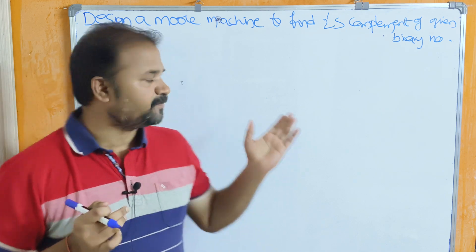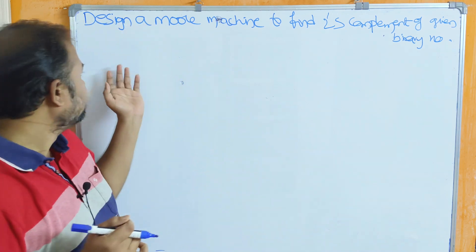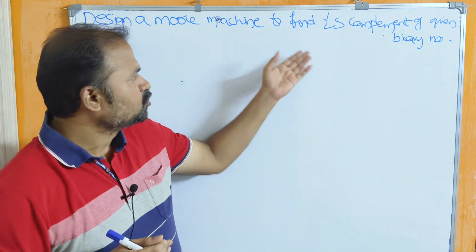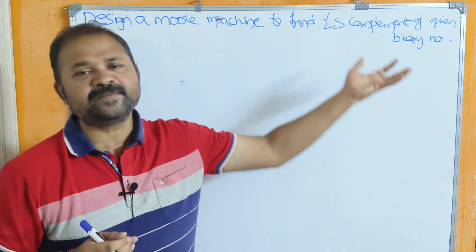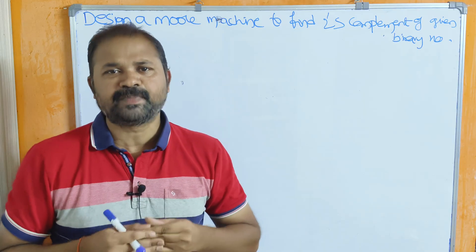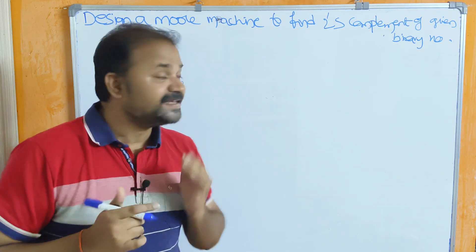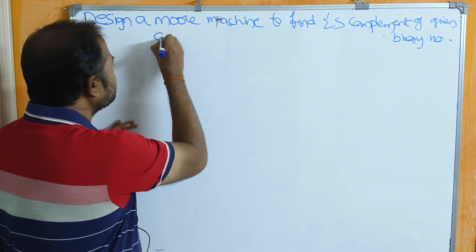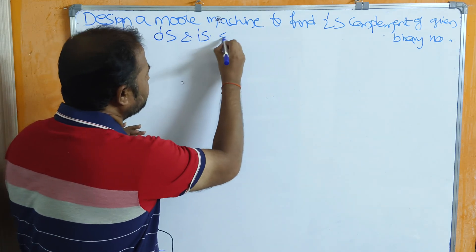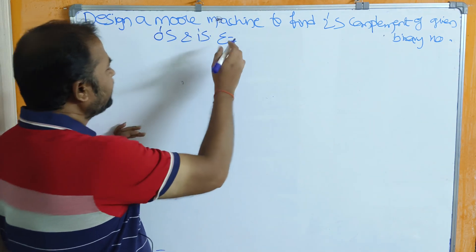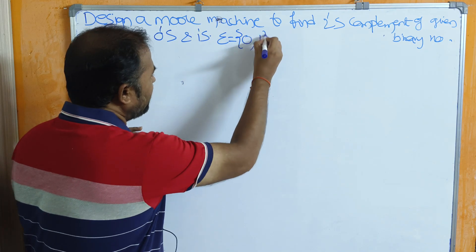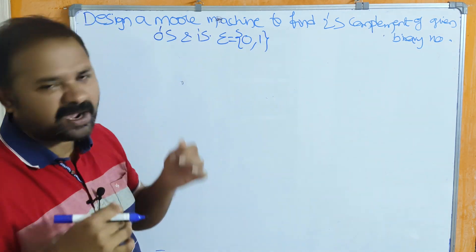Let's see this example: Design a Moore machine to find the 2's complement of a given binary number. We know that a binary number is a combination of zeros and ones. So the input alphabet sigma equals {0, 1}.